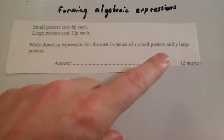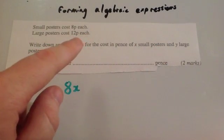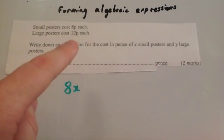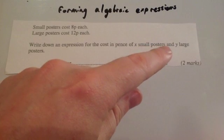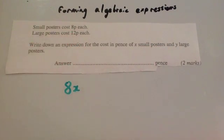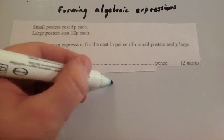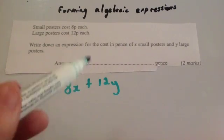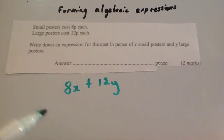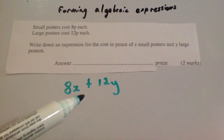To find the cost of the large posters: if you were to buy 2 large posters it would be 2 times 12, which is 24p. If you were to buy 3, you would do 3 times 12, which is 36p. If you buy y of them, you're going to do y times 12. But in algebra the numbers come first, so to find the total cost you add them together: plus 12y. So the cost in pence of x small posters and y large posters would be 8x plus 12y.